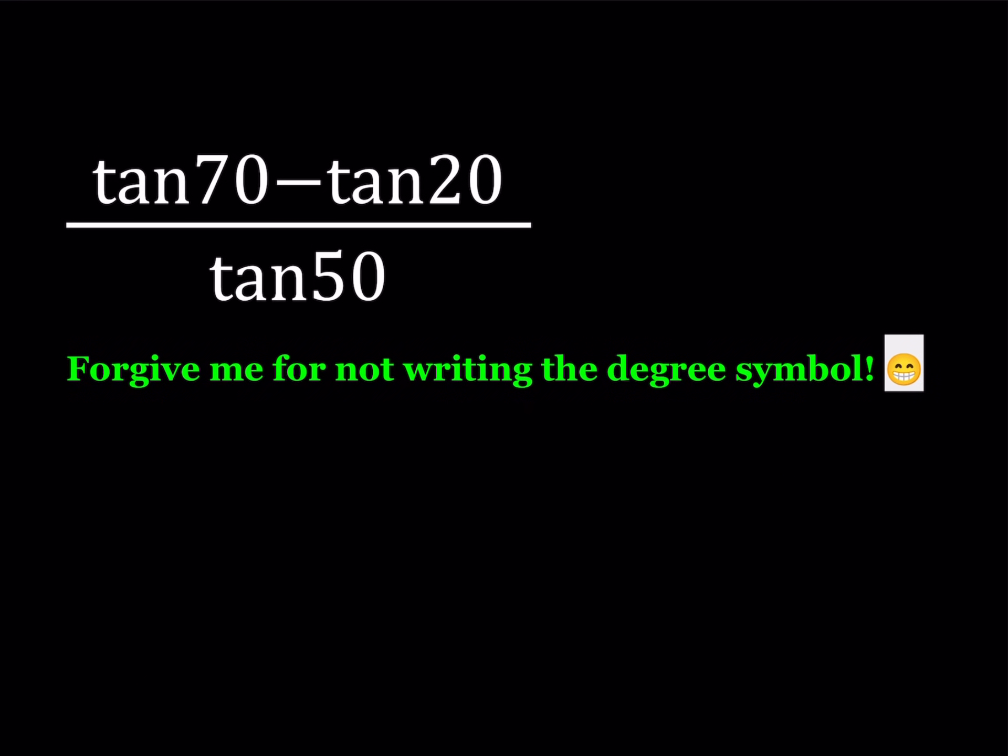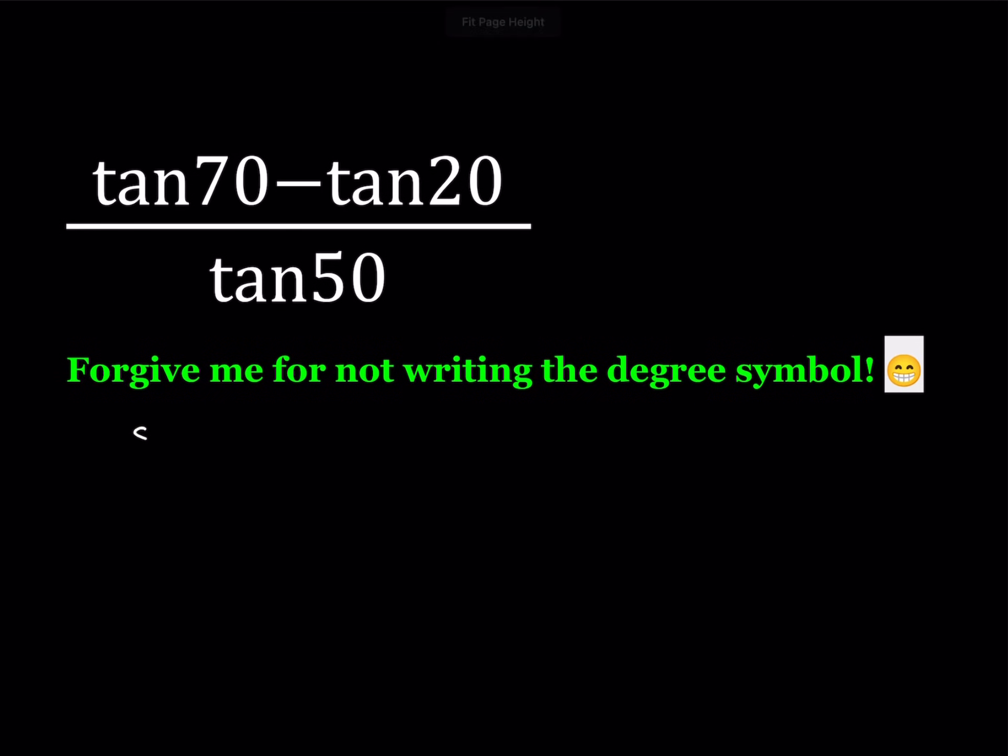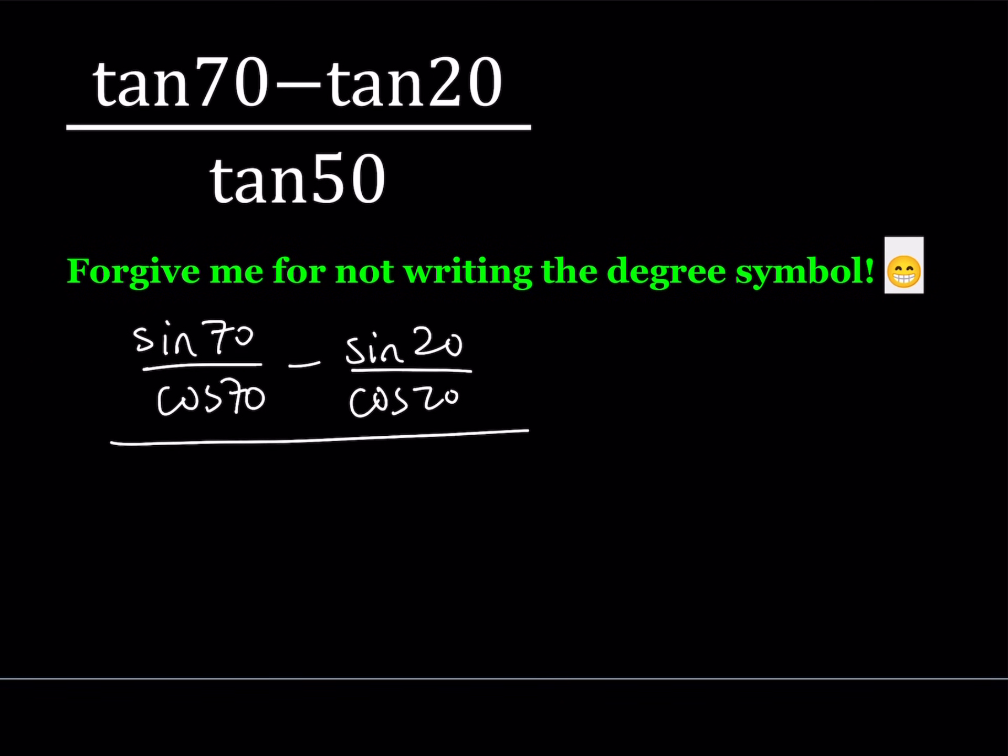Let me write it this way without using the degree symbol, hopefully you'll forgive me for that. So we have tangent 70 minus tangent 20 divided by tangent 50. Let's go ahead and use the identity tangent alpha equals sine alpha over cosine alpha. So this is going to give me sine 70 over cosine 70 minus sine 20 over cosine 20. And that's going to be divided by sine 50 over cosine 50.